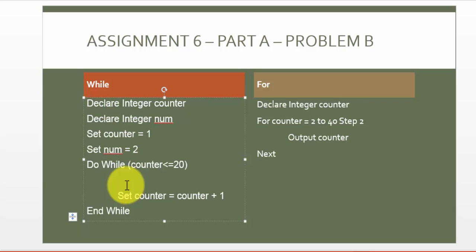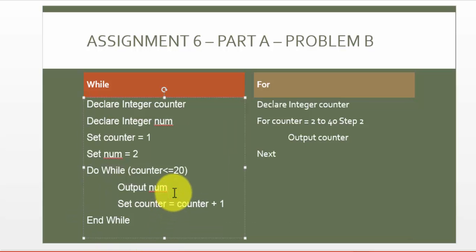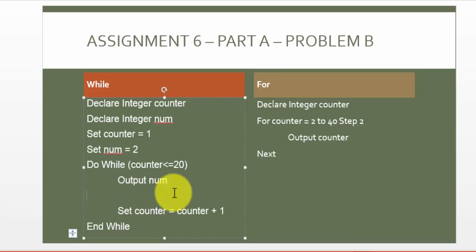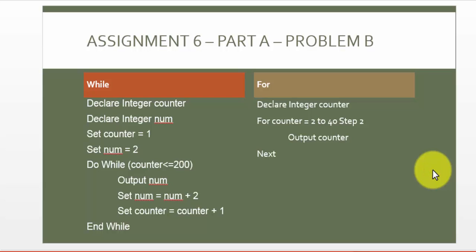I'm going to output number, then increment number by 2 each time the loop runs, since we need every even number. This approach is extremely beneficial because if I change the problem to display the first 200 even numbers, I just add a zero and my entire logic is good to go. With the other approach, you'd first have to calculate what the 200th even number would be — which is 400 — and then write your entire logic around that.